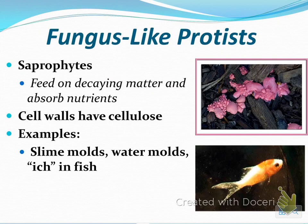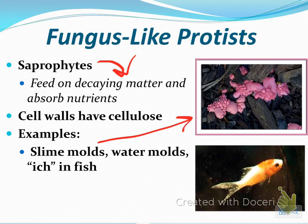The last category of protists is fungus-like protists. These are known as saprophytes, meaning they feed on decaying matter and absorb nutrition that way. Their cell walls have cellulose. Examples include slime molds, water molds, and ick in fish. If you've ever had an aquarium, you're probably familiar with ick — it's a parasite that makes fish rub their bodies against the sides of the tank.